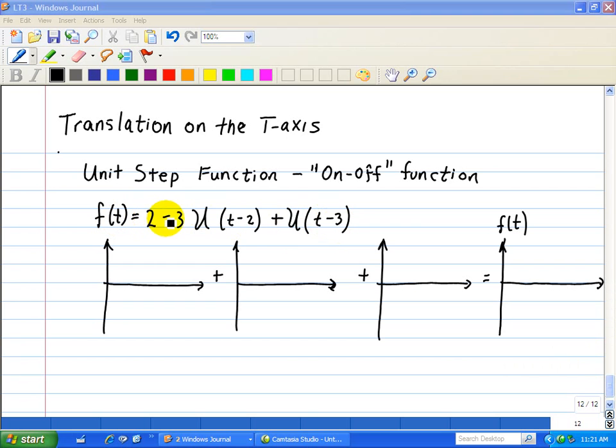We'll draw these functions individually and then add them up to form f(t). So here, for our first function, 2 is just simply a constant with a weight of 2 or a height of 2, as drawn here. So basically, it's not delayed, starts at 0, and then we have a value of 2 from then on.